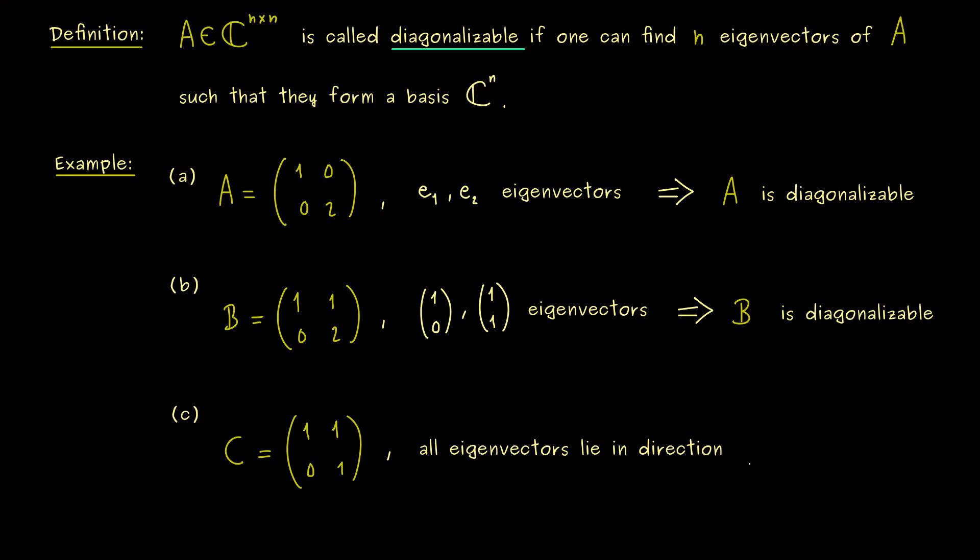However, this is the only direction we find. If you calculate the eigenspace, you see it's only the span of this vector. And please note, for this matrix C, we only find 1 eigenvalue at all.